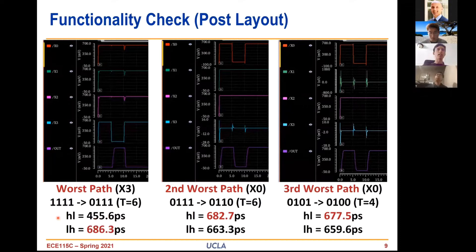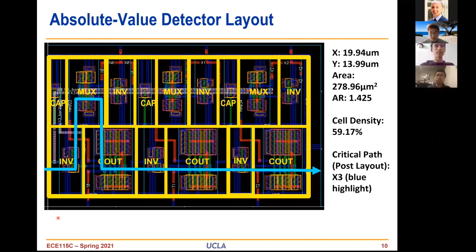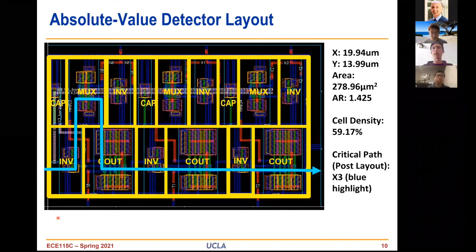Post-layout, our worst critical path is actually along a different path — X3. The second and third worst paths are still the first two worst paths from the schematic, which is expected. X3 was an interesting one that emerged: it was the low-to-high transition of X3. Because X3 is a select bit for our MUX and also an input into our carry-out logic, we needed to route it on metal 4, which meant a lot of vias and long wires. We believe wire parasitics ended up pushing the X3 path over X0. Notably, because the X3 path goes through the MUX, it shares most of the critical path with X0 — the parasitics are what pushed it over in the layout.